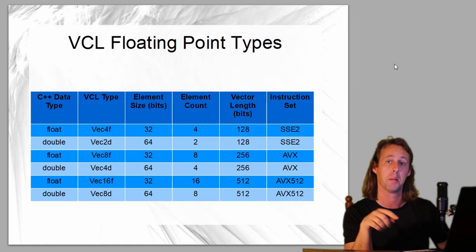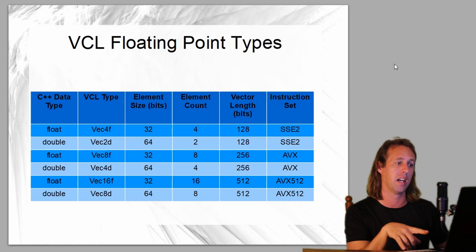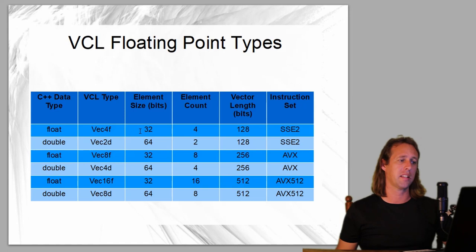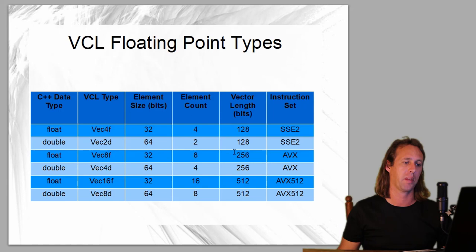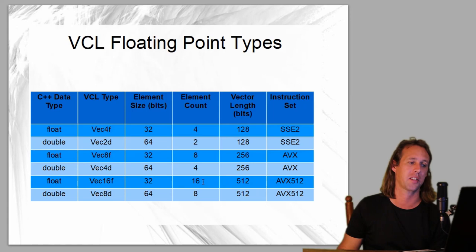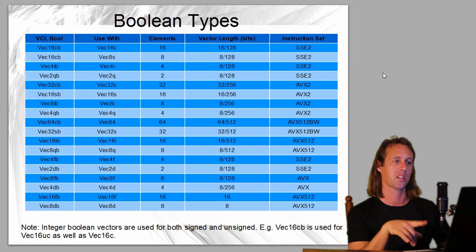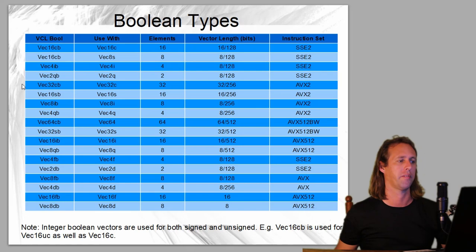The floating point data types: there are just two - single precision floats and doubles, both IEEE 754. With 128-bit vectors you can store up to four floats or two doubles. With 256-bit vectors you can do up to eight single precision floats or four doubles. With 512-bit vectors you can store up to 16 floating point values or eight double precision numbers. VCL also has Boolean vector types which we'll look at later - these are for conditions, emulating branching.